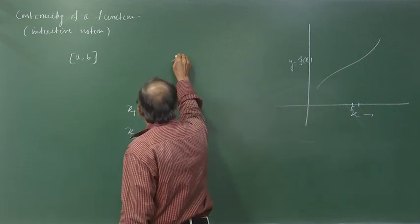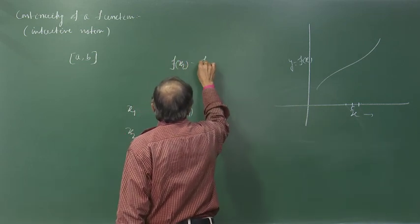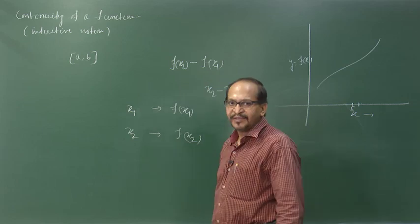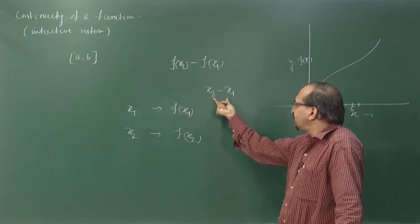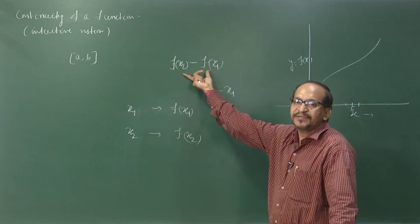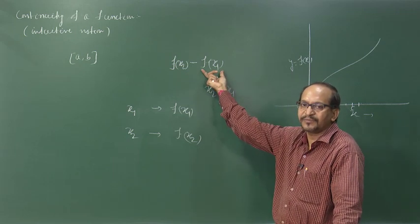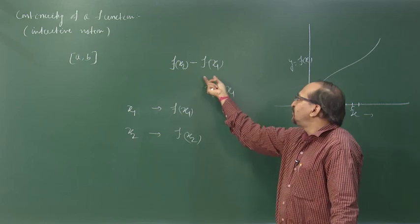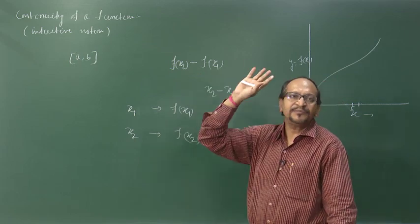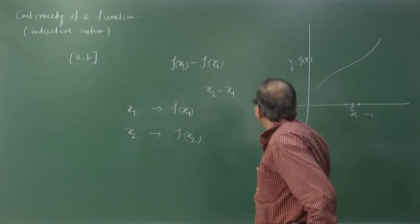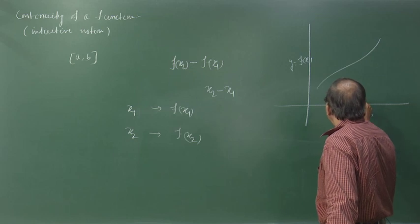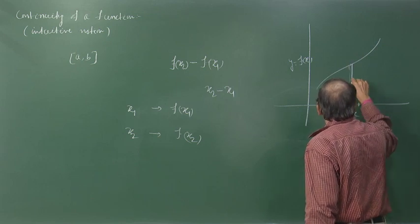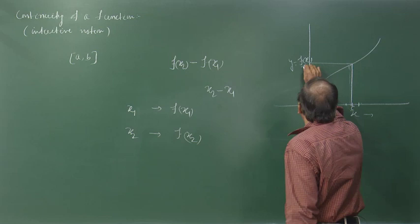We want to see the relative change of f(x2) minus f(x1) with respect to x2 minus x1. If x2 minus x1 is small, then f(x2) minus f(x1) must also be very small if the function is continuous. If the change in x is small but the change in f is very large, then the function is discontinuous. Let us define a point c in the interval, with function value f(c).